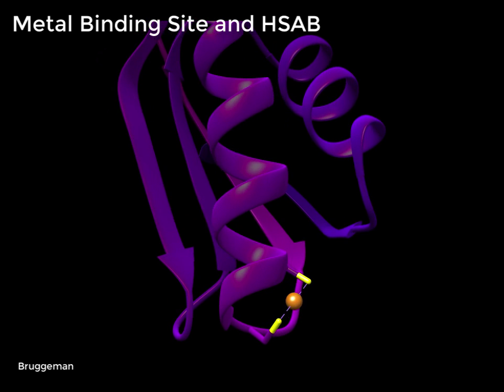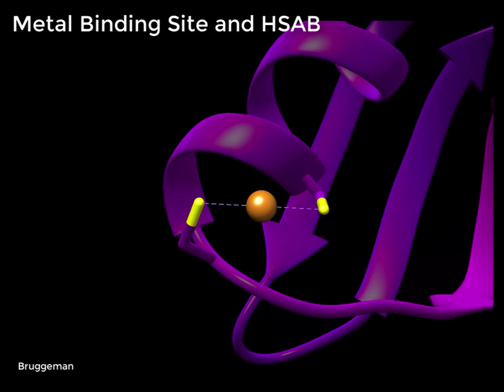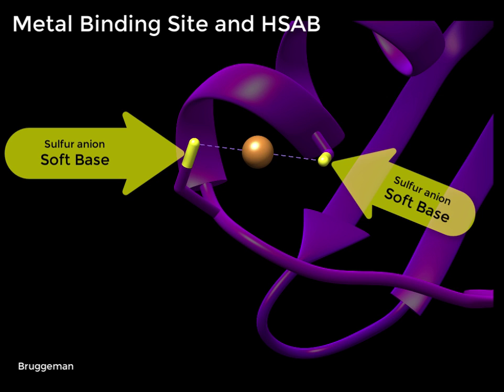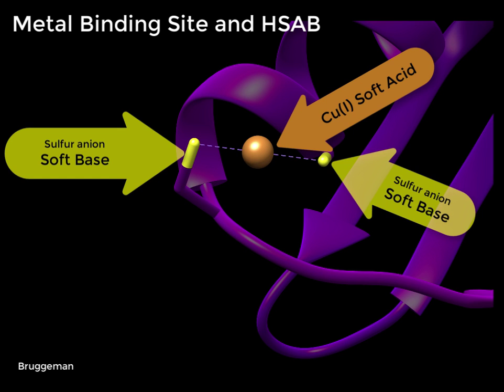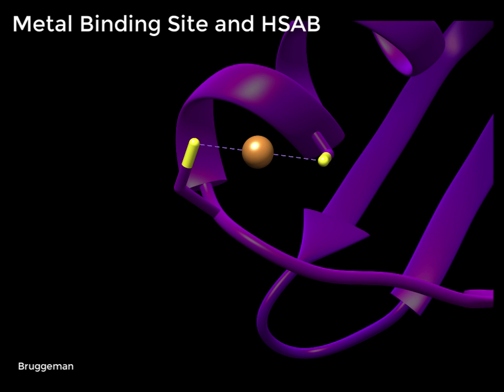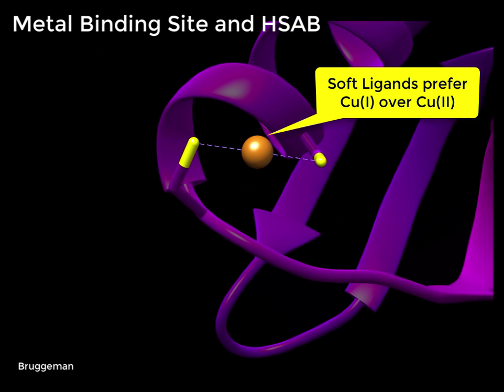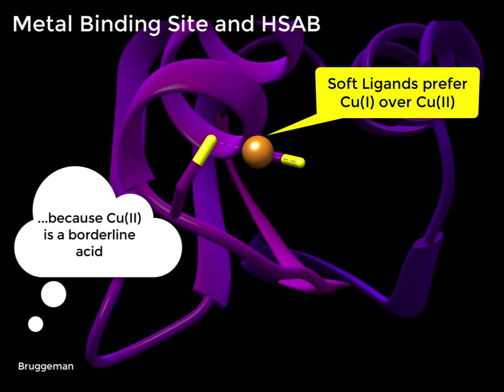The binding site of ATX1 is characterized by two cysteine residues, which contain a terminal sulfur when deprotonated. Also due to the radius and the charge, sulfur is considered a soft base. The hard-soft acid-base theory follows the convention that soft bases prefer to bind with similarly soft acids. Thus, it is preferred that soft copper 1 binds with the soft sulfurs. The softness of the protein's binding site contributes to the selectivity of copper 1 over copper 2, because the borderline acid would not be selected when competing with the soft acid.